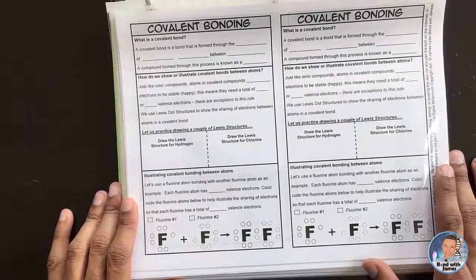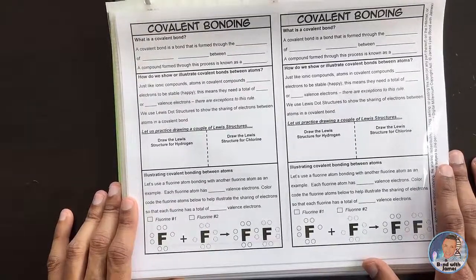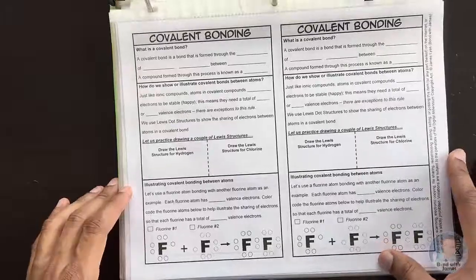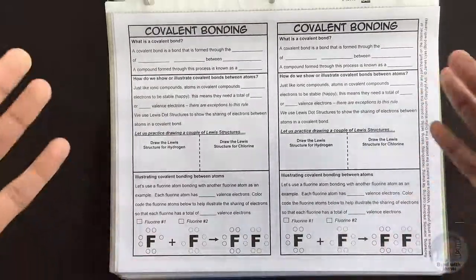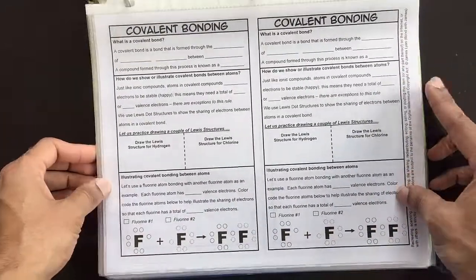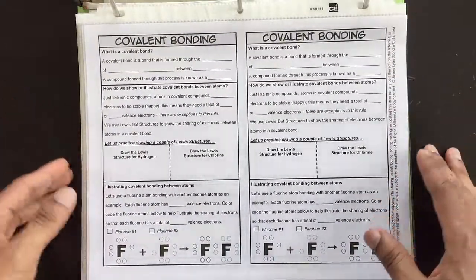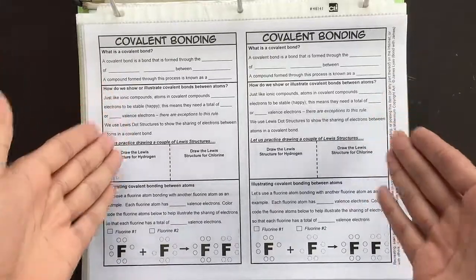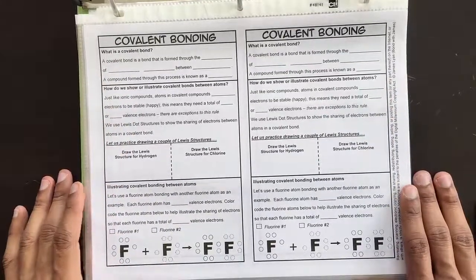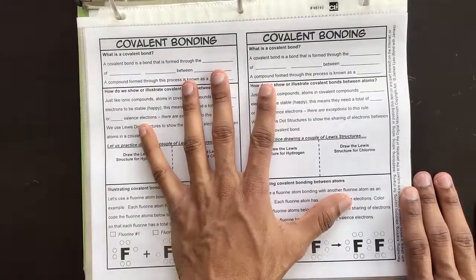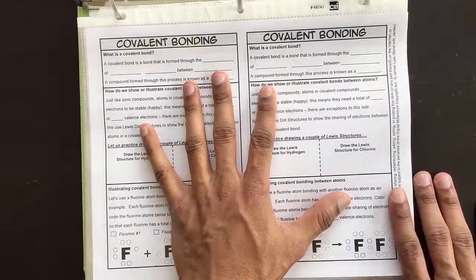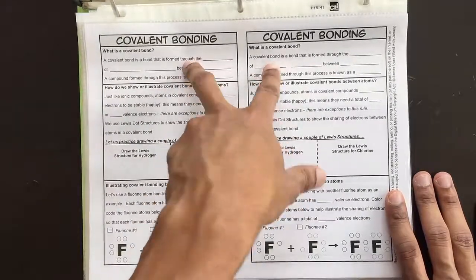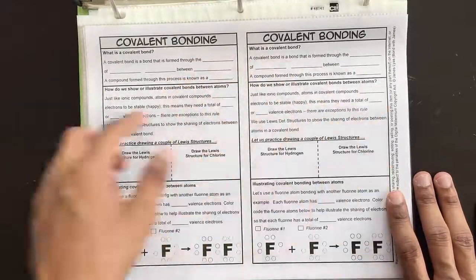Hey, this is James, and this is the covalent bonding for chemistry interactive notebooks. As with all my chemistry interactive notebook products, what you'll notice when you open up the product itself is that there are sheets that look like this. These are meant to go into the interactive notebook, and so you'll find two student note pages on one sheet of paper.